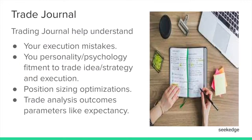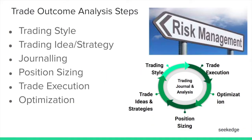To summarize what we have discussed: style fitment varies with each person and is a tremendous risk unless identified early. The idea and strategy — backtesting results need not match with forward testing, so that is a risk. If you don't have journaling, you don't know how to measure it. Position sizing requires figuring out whether the expectancy seen in backtesting is being replicated in the forward-testing outcome analysis.